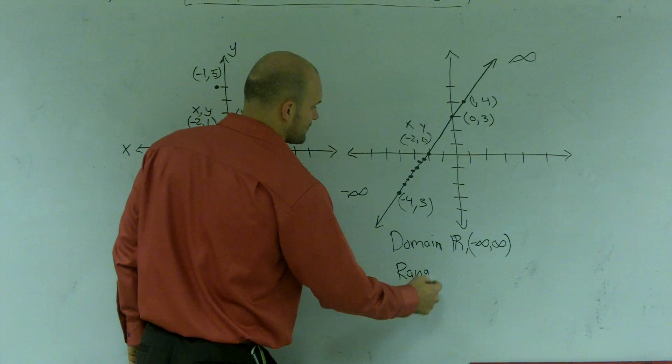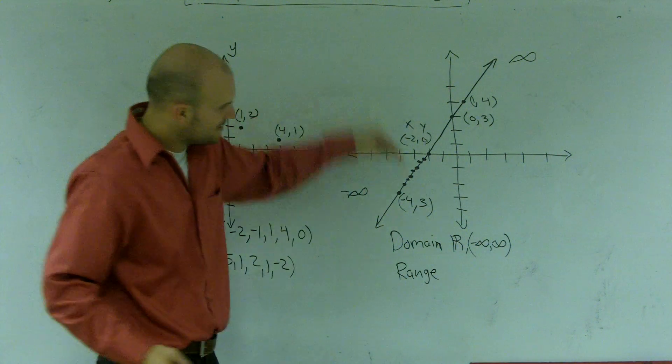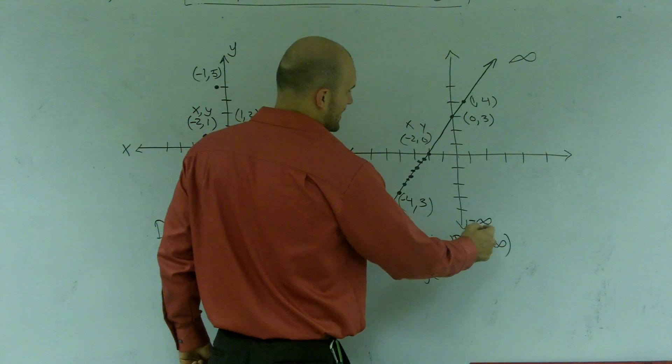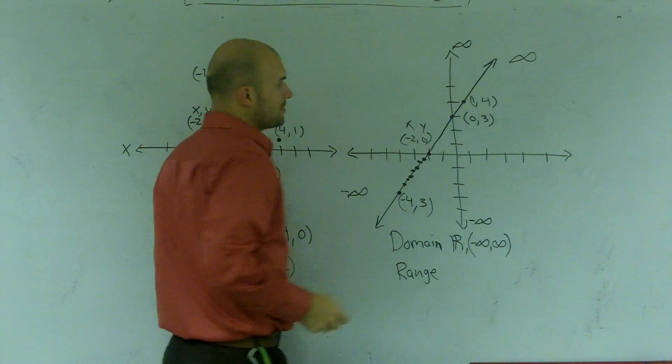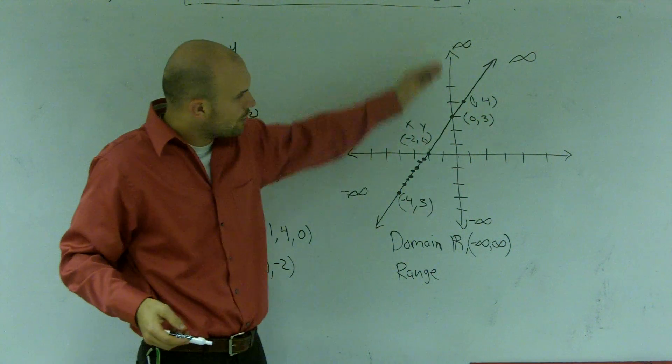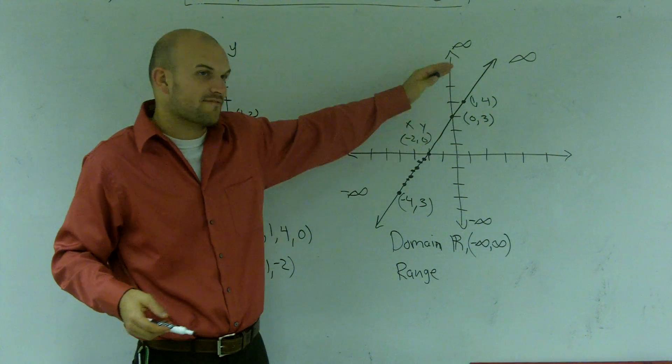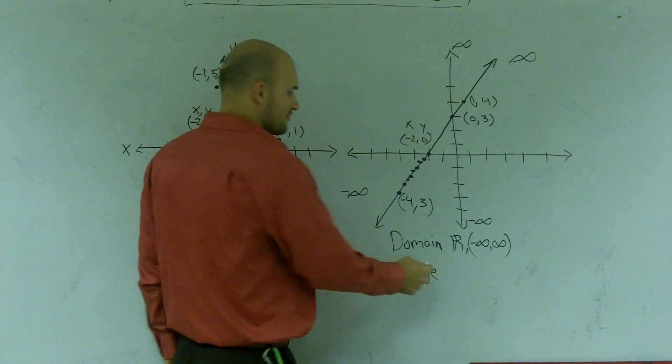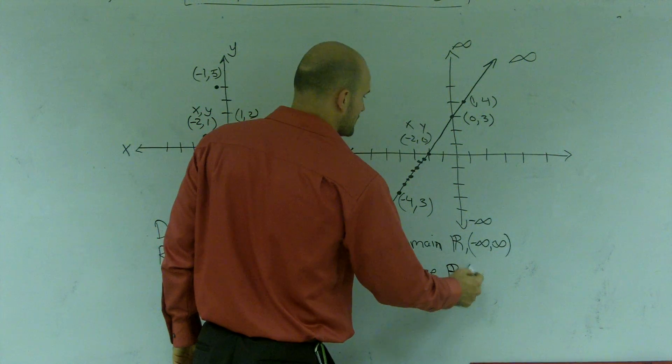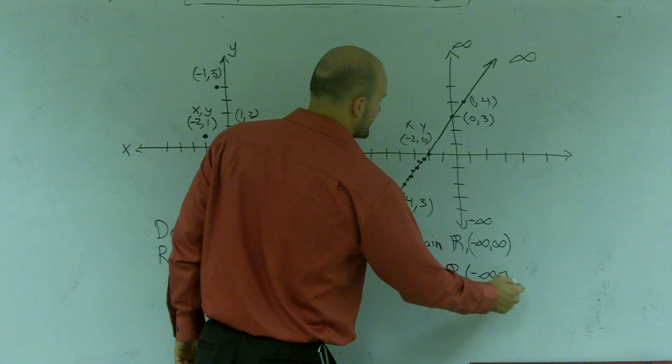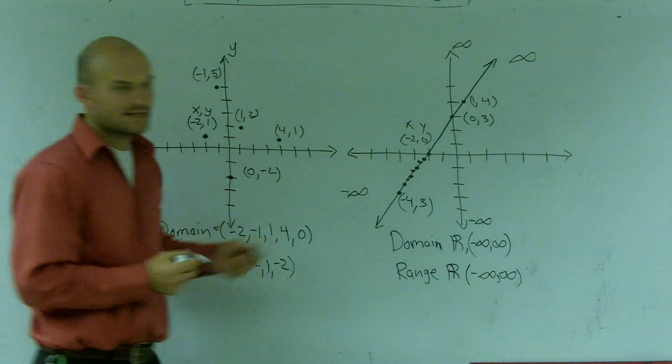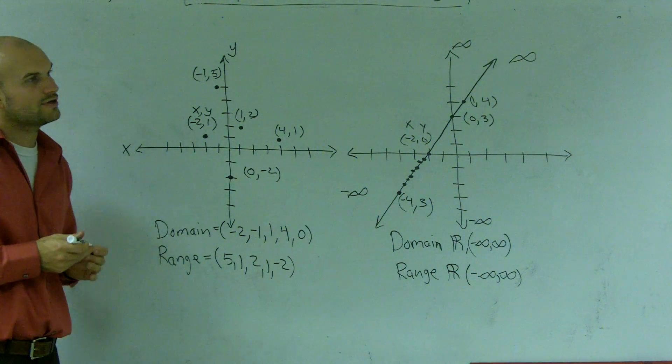Then I can write my range is the same thing. Again, this is all going down to negative infinity. This is going up to infinity. And what I notice is there's no break in the graph. So every single y value is going to be covered. So my range will be the exact same thing. All real numbers or from negative infinity to infinity. So that's how you determine the domain and range when given a graph.